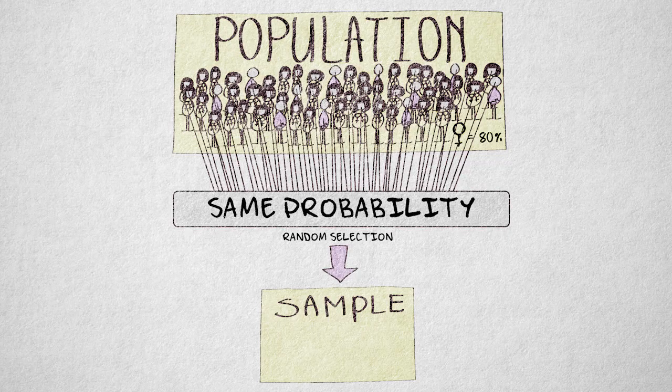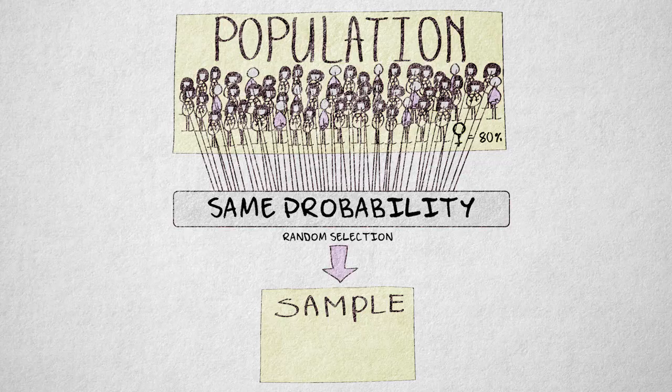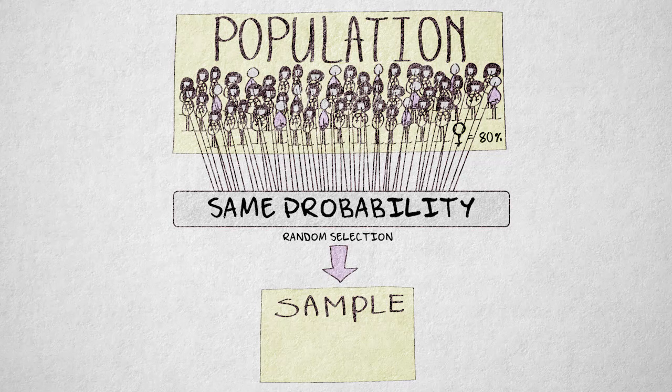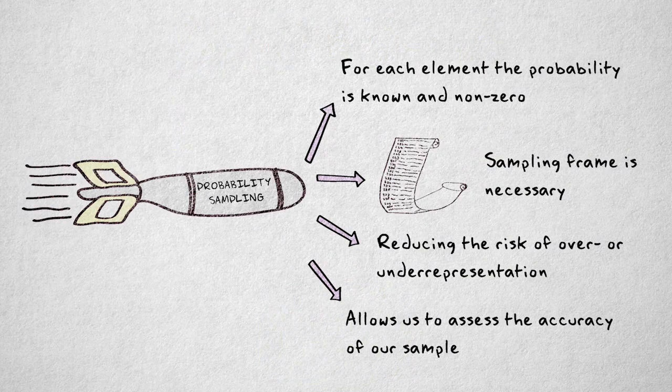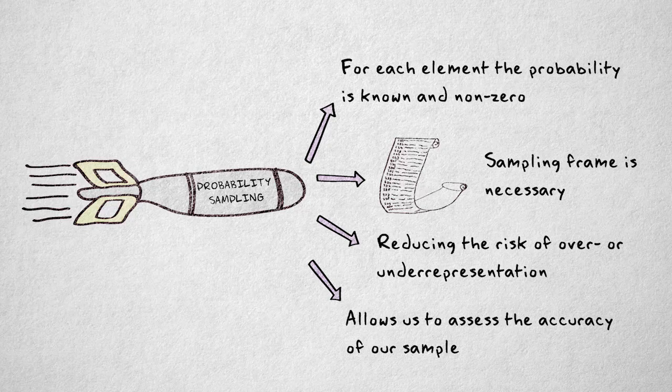Besides resulting in a representative sample in the long run, probability sampling has another advantage. Probability sampling allows us to assess the accuracy of our sample estimate.